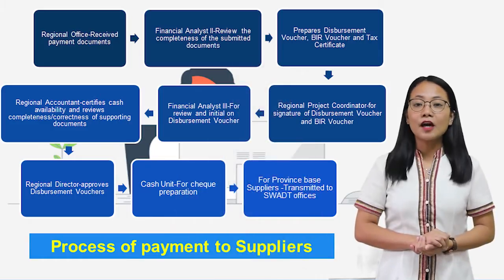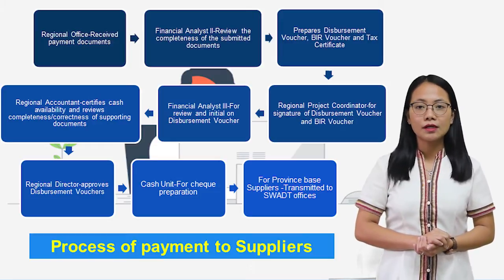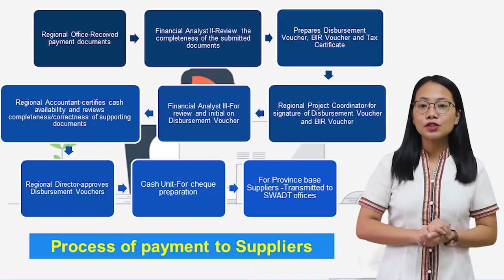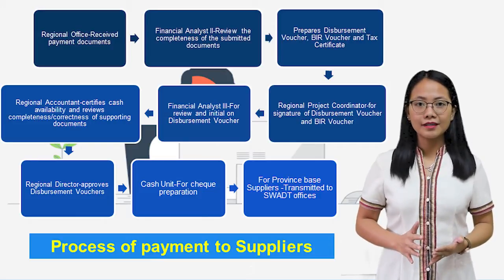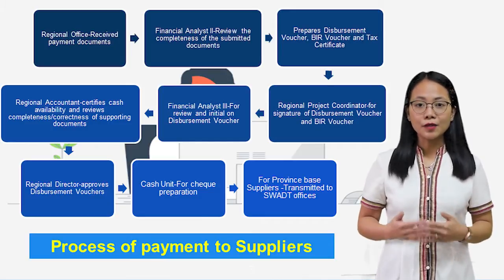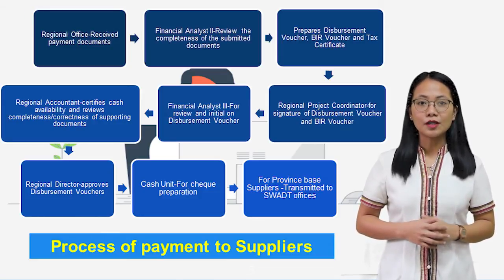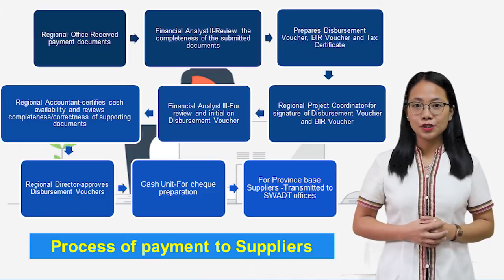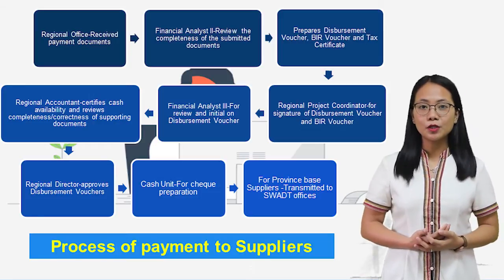How do we process the payment of the suppliers? Basically, the approved purchase order will be processed by the procurement property and asset section before it will be sent to the area or to the end user. Only then will the end user be able to conduct the activity. After the activity is conducted, the complete documents will be sent to the regional office for payment. Upon receipt of the document, the Financial Analyst 2 will review if the attachments are complete and accurate based on the approved purchase order and the submitted quotation of the supplier.